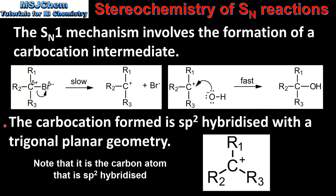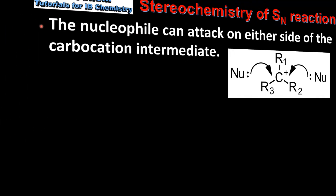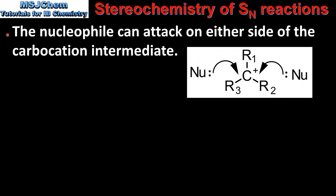The carbocation formed in step 1 is sp2 hybridized with a trigonal planar geometry. Here we can see the geometry of the carbocation intermediate. With 3 electron domains around the carbon atom, all of which are bonding domains, we get a trigonal planar geometry. Because of this trigonal planar geometry, the nucleophile can attack on either side of the carbocation intermediate.